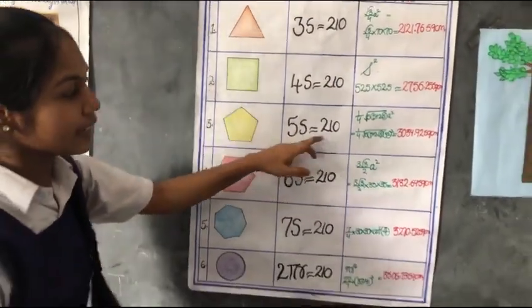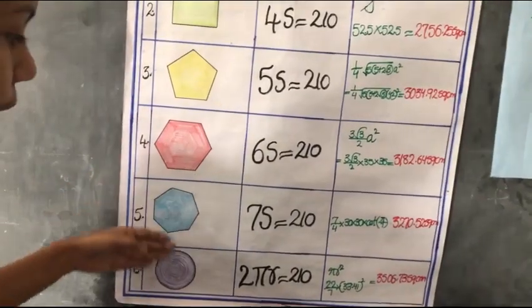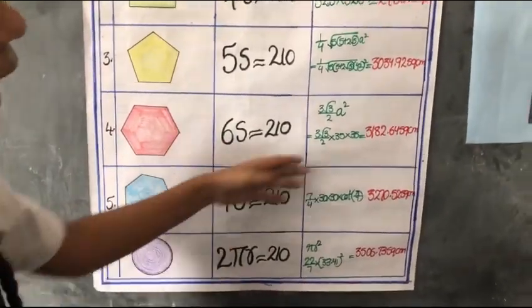For a pentagon with the same perimeter, this is the area. The area of the remaining polygons with the same perimeter, we calculate here. When we observe the areas,